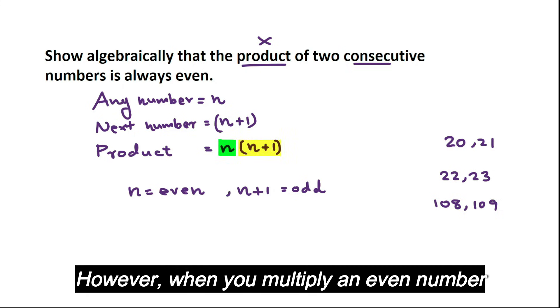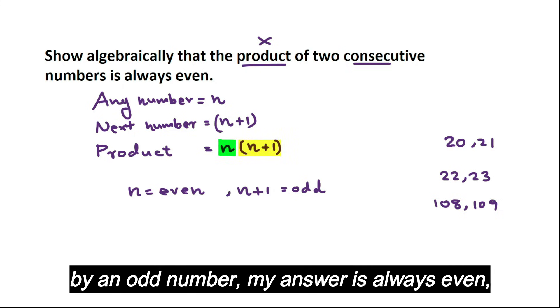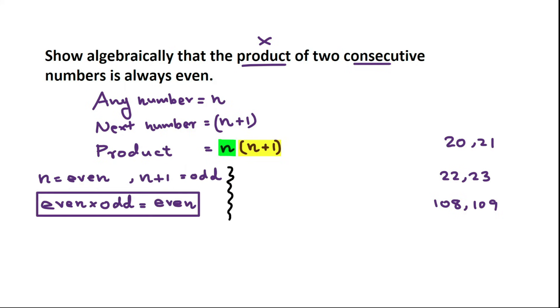However, when you multiply an even number by an odd number, my answer is always even, isn't it? Now let's think about the other possibility.